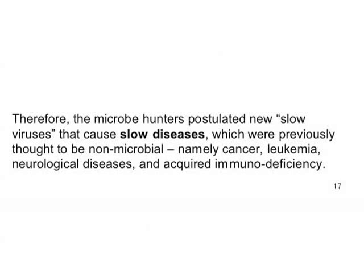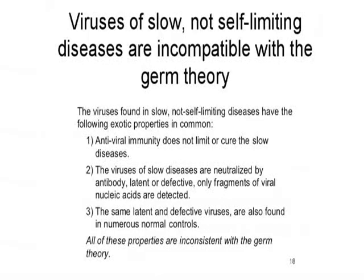Christian Fiala and Lawrence mentioned the discrepancies we are seeing all the time. The viruses proposed as causes of slow, non-self-limiting diseases — like cancer — are incompatible with the germ theory for several reasons. Unlike infectious diseases that are self-limiting, these diseases go on no matter what happens.